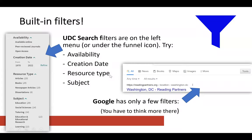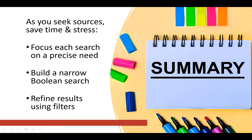So to sum up quickly, three techniques for getting to a narrower, smaller set of results: focus each search on a precise need that you have; build a narrow Boolean search using AND and OR, making sure the OR is in the parentheses; and refine your results using the filters that are built into the systems. And that is why I like big searches.